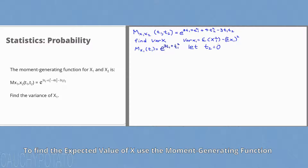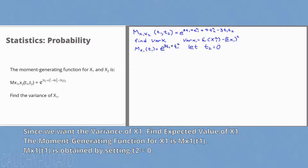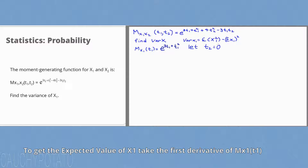In order to get the variance of x1, we need the expected value of x1 and the expected value of x1 squared. To get the expected value from a moment generating function, take its derivative and let t1 equal 0. So take the derivative of e to the 3t1 plus t1 squared.